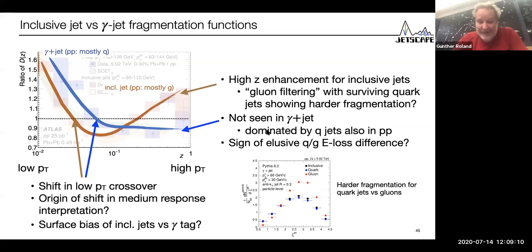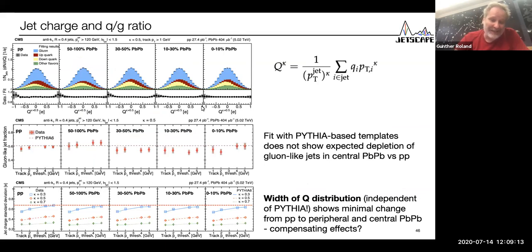One reason I'm really anxious to achieve that is, for example, this recent CMS measurement which looks at the charge of jets, which should reflect the charge of the initiating parton flavor. This is the definition. You sum over all the track constituents with some exponent kappa here and their charge Q. To my big surprise, you don't see really a difference.